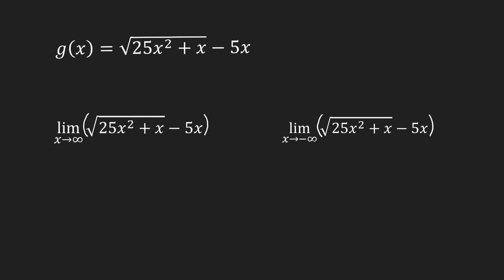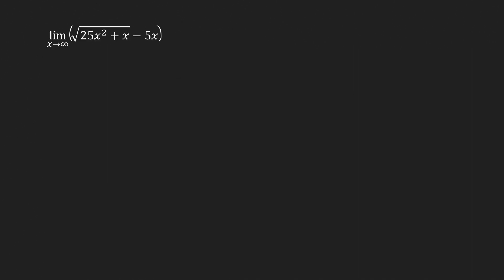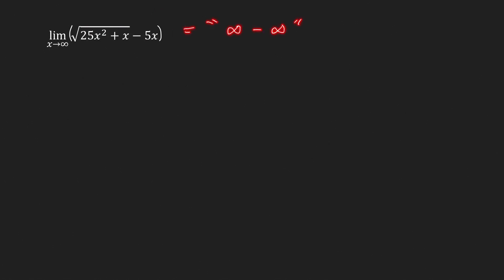Now let us find the horizontal asymptotes of the function g, if they exist. Again, we have to find the limits at positive and negative infinity. As x goes to infinity, the radicand goes to infinity and the 5x term also goes to infinity. So the limit has the form infinity minus infinity, which is an indeterminate form, and we need extra effort to evaluate it.